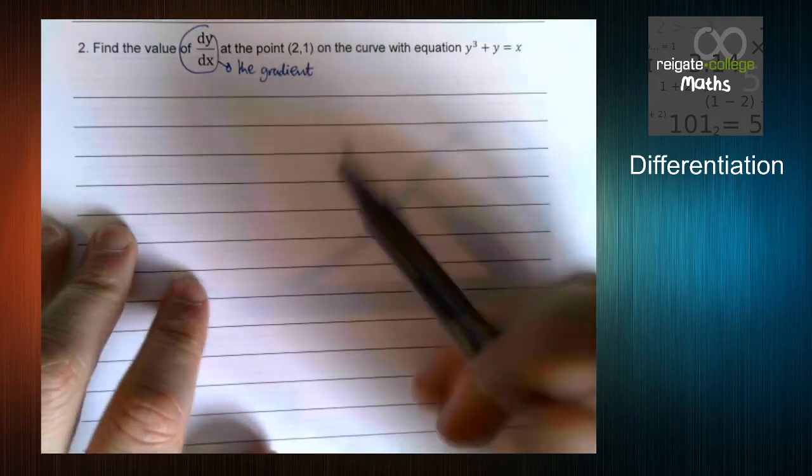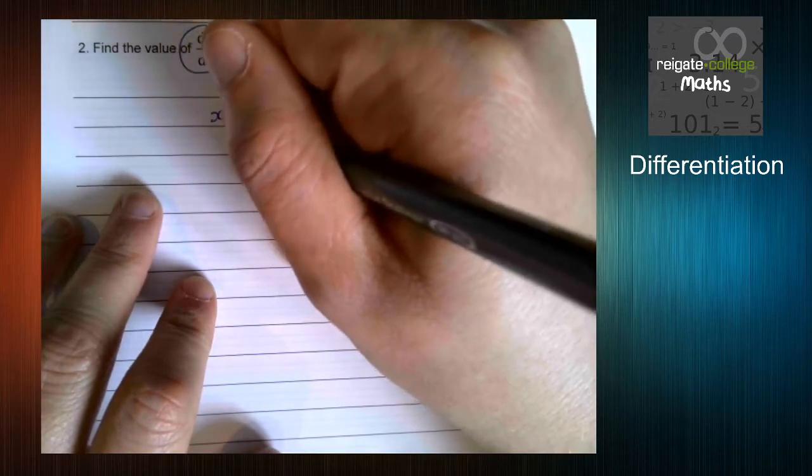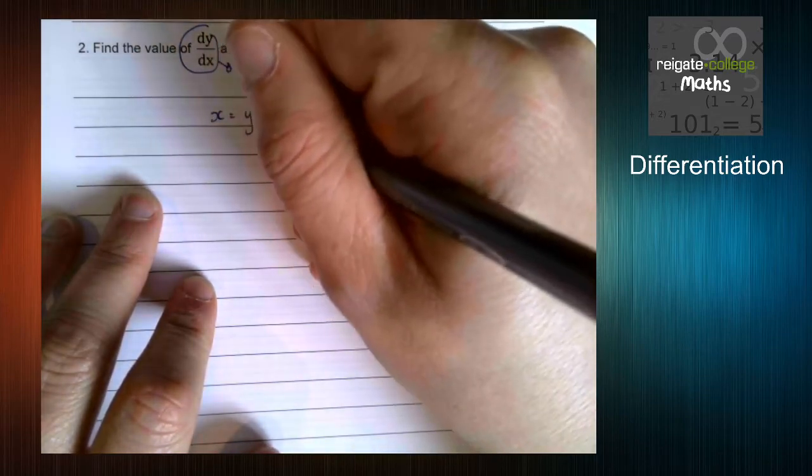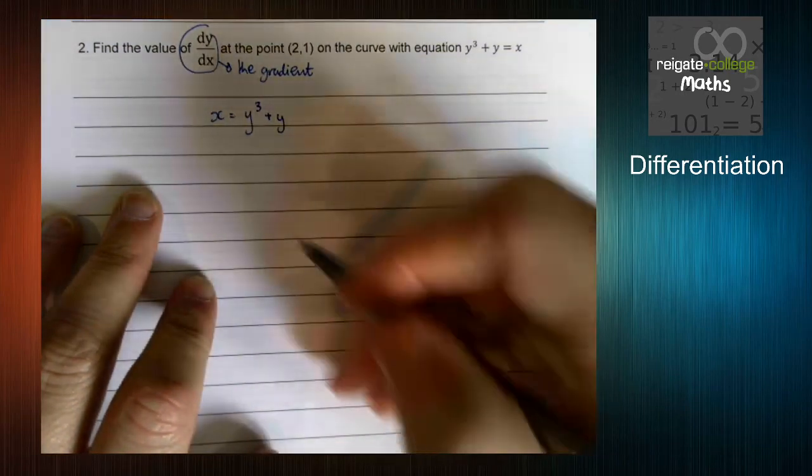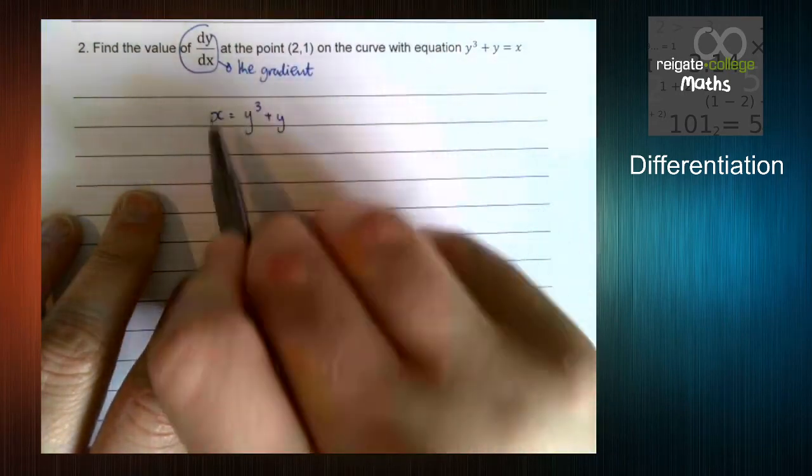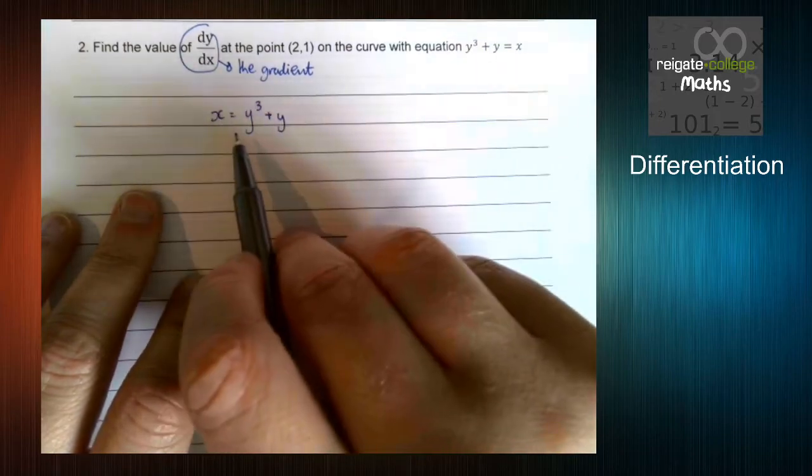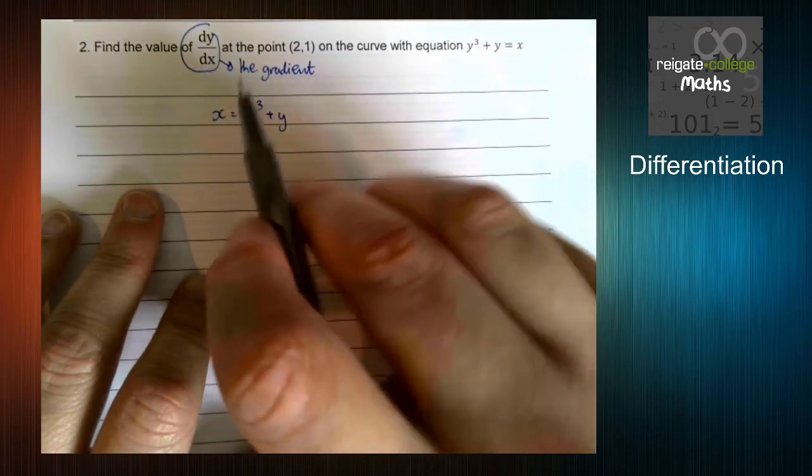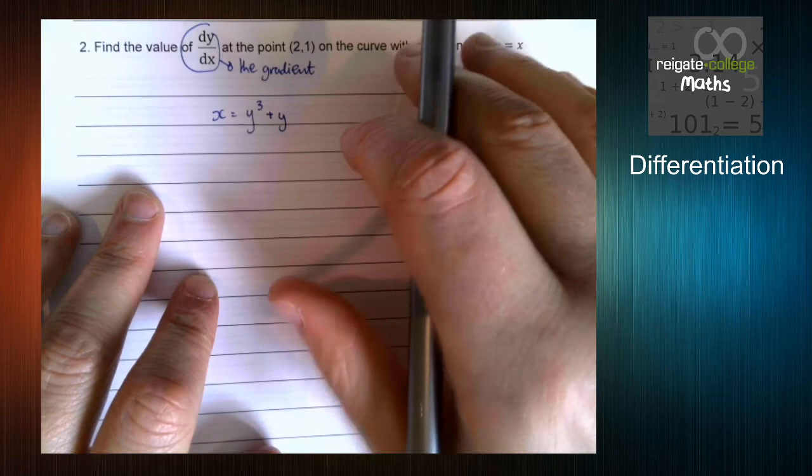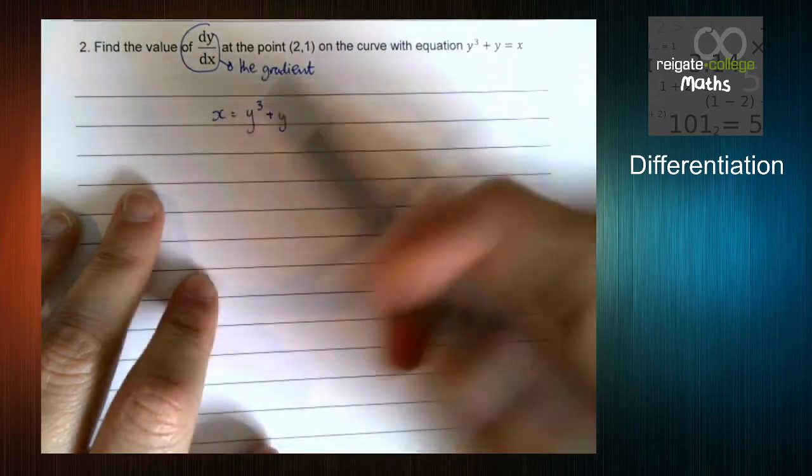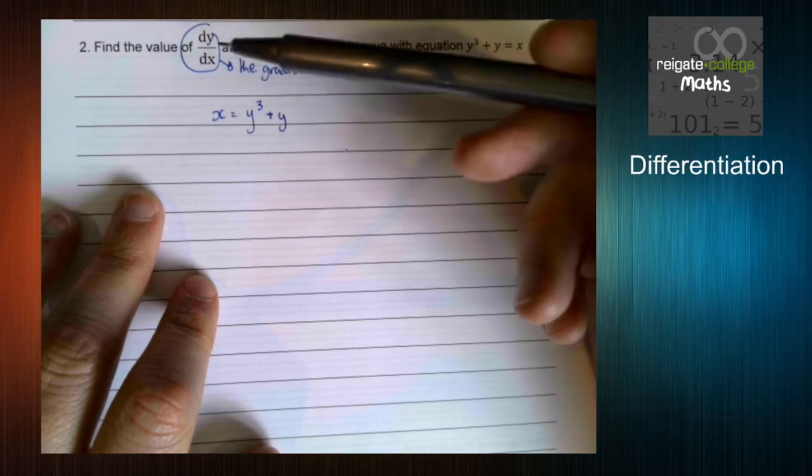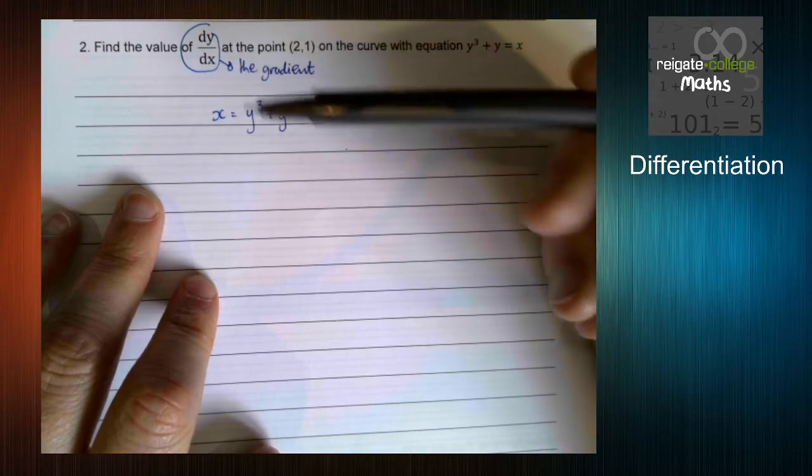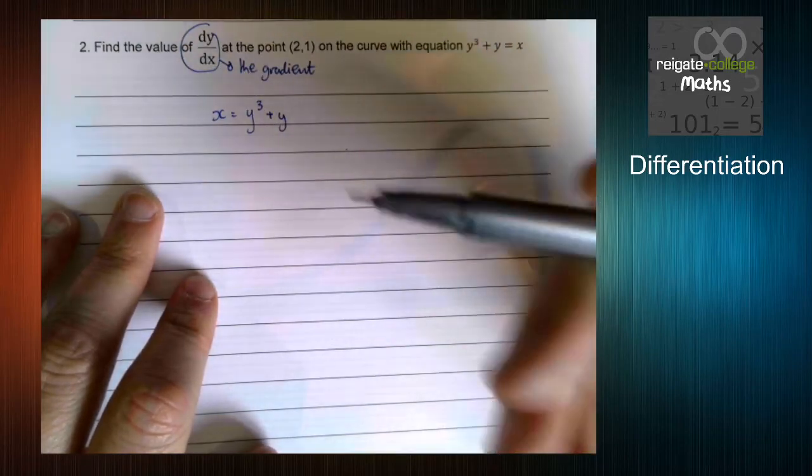So we know that x = y³ + y. That's what we've got. So this is a function that we cannot rearrange to get in the form y = f(x). We can't do it, or not easily anyway. So we can't get it into that form and then differentiate like we normally would. We have to use this inverse method.